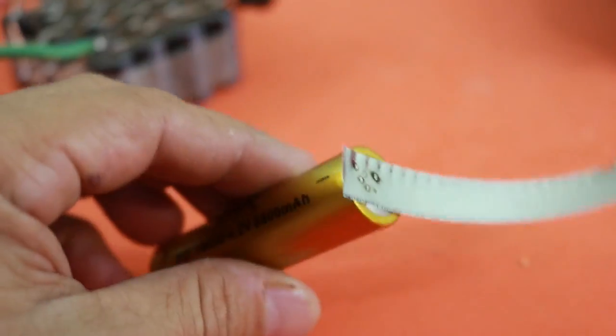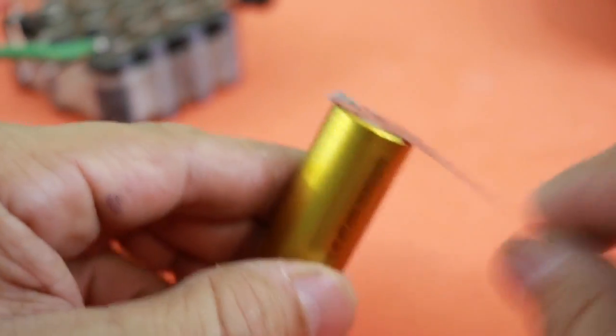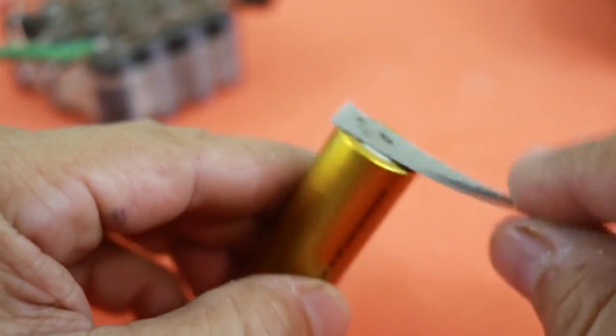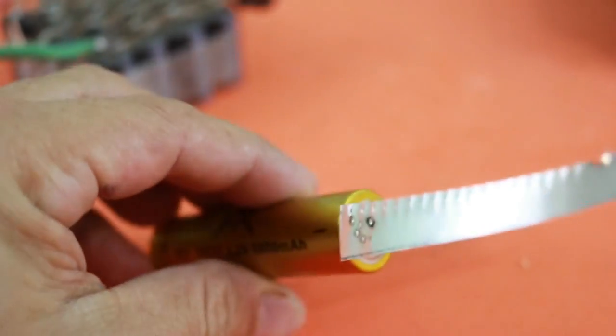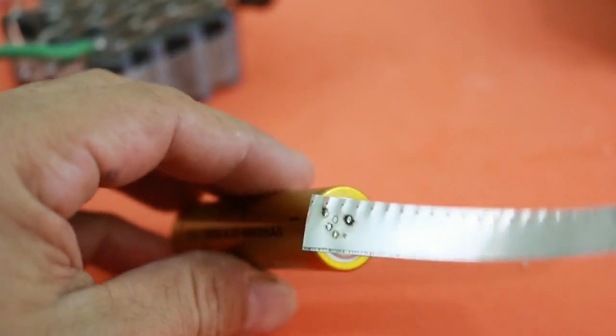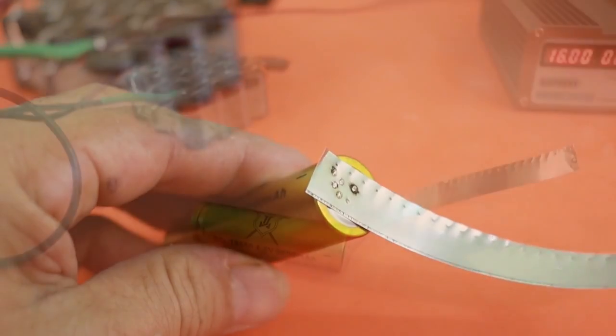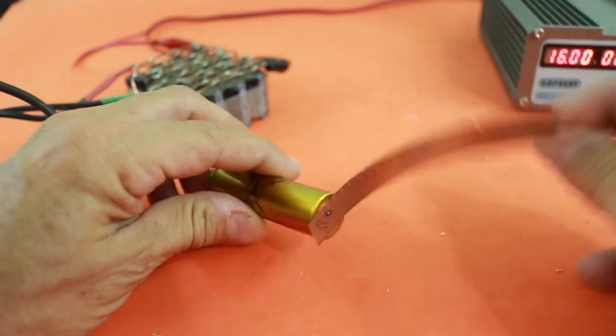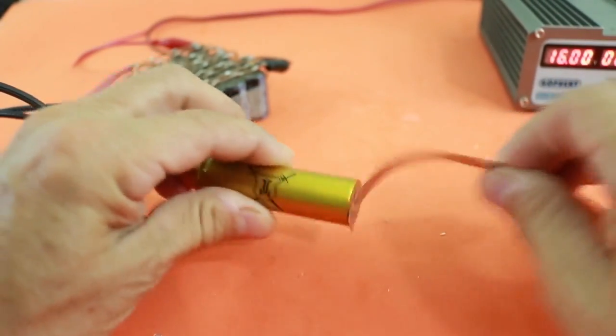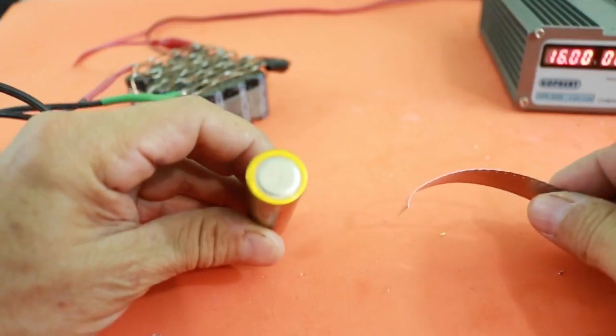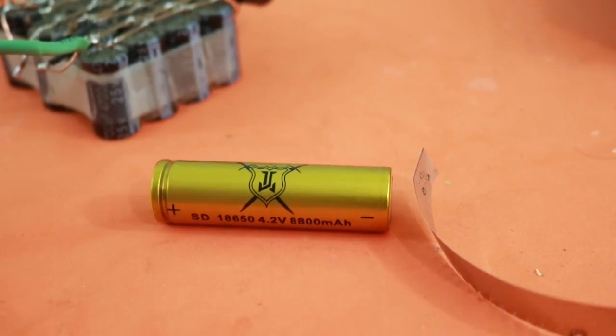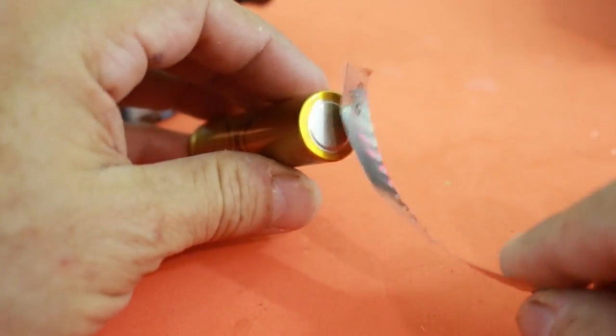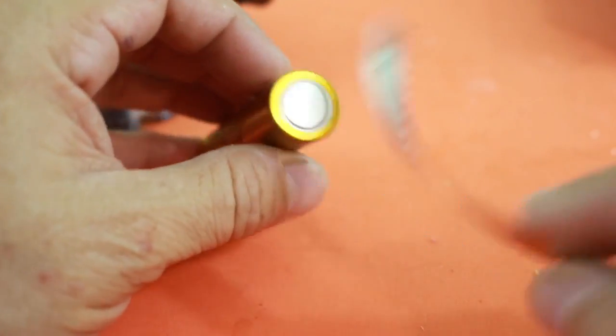Okay, it seems to be soldered, but let's see. Let's apply more force to see if it resists. Well, as you can see, if you pull it hard, the solder joint will not resist.